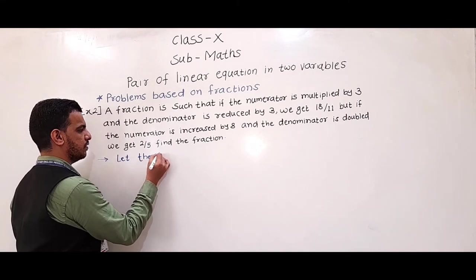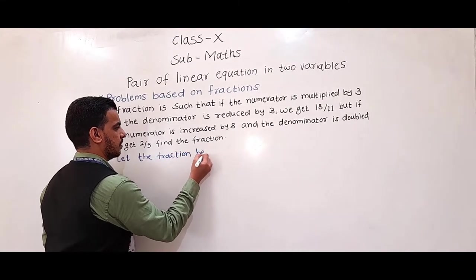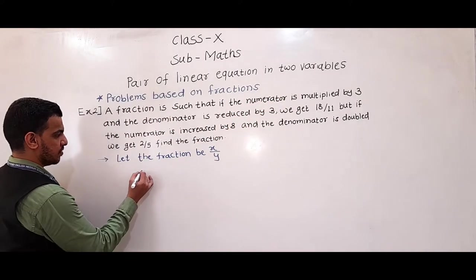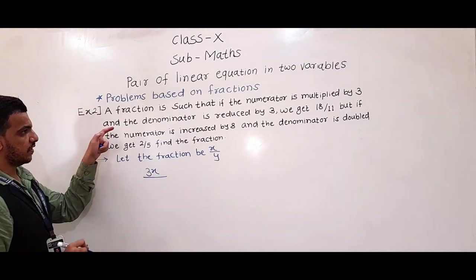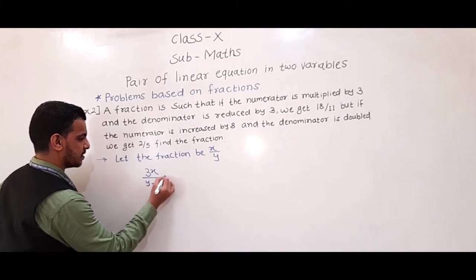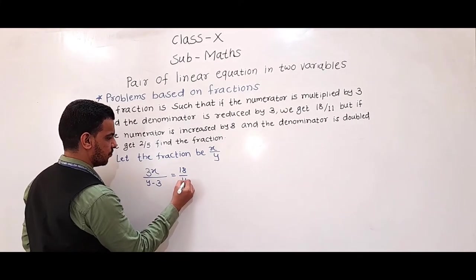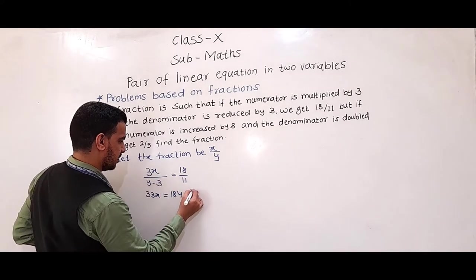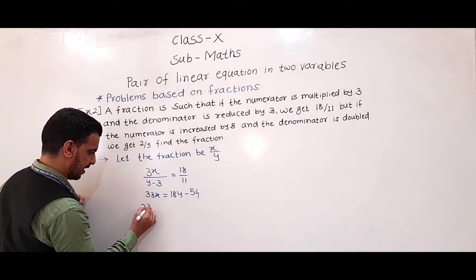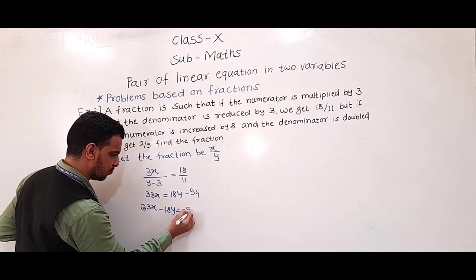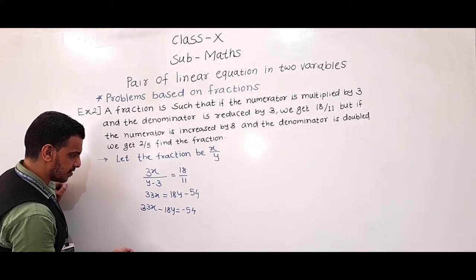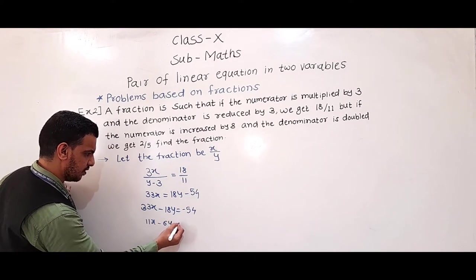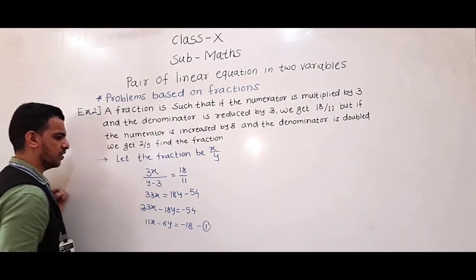Again, let the fraction be x upon y. The first condition is: if the numerator is multiplied by 3 and the denominator is reduced by 3, so 3x / (y − 3) = 18/11. If we simplify: 33x = 18y − 54, so 33x − 18y = −54. Dividing by 3: 11x − 6y = −18. This is equation 1.